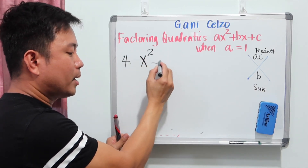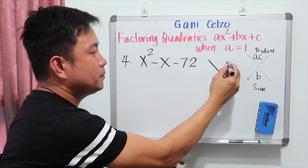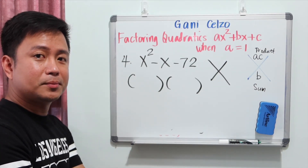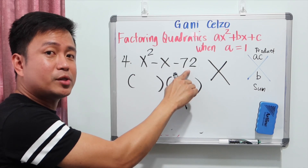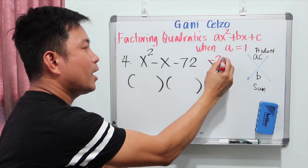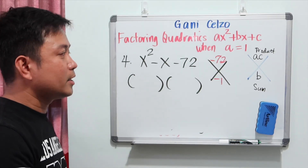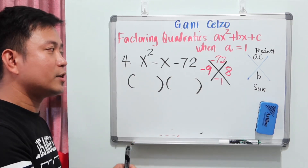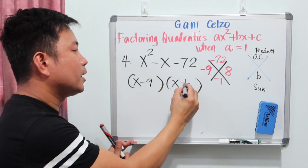Next example: x squared minus x minus 72. The b value is negative 1, so a is positive 1, b is negative 1, and c is negative 72. We need a product of negative 72 and a sum of negative 1. The numbers are negative 9 and positive 8, because negative 9 times positive 8 is negative 72, and when you add them it's negative 1. So the factors are x minus 9 and x plus 8.